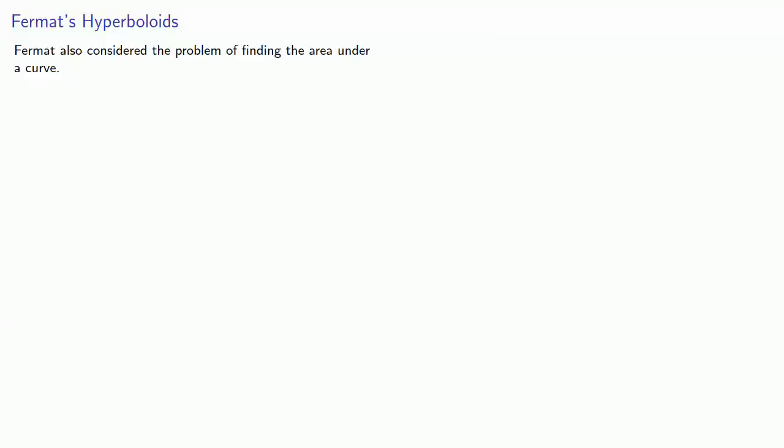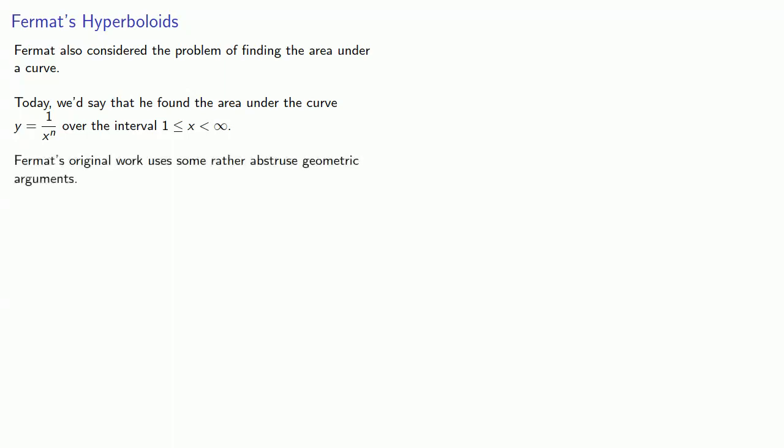Fermat also considered the problem of finding the area under a curve. Today we'd say he found the area under the curve y equals 1 over x to the n over the interval from 1 to infinity. Now Fermat's original work used some rather abstruse geometric arguments. We won't try to reproduce it here, instead we'll focus on the main points.